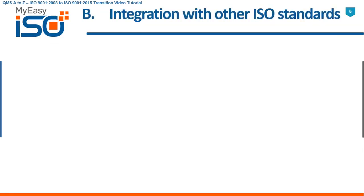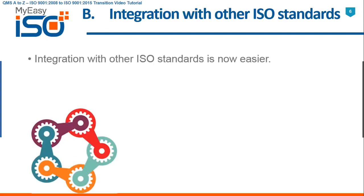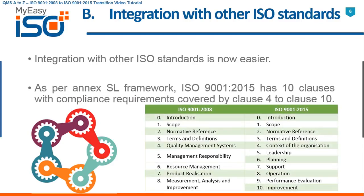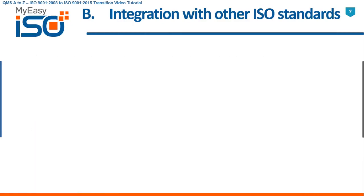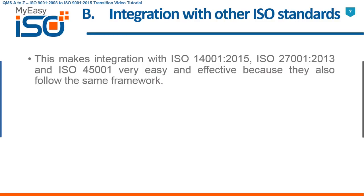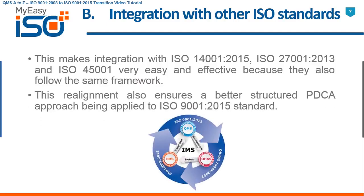B — Integration with other ISO standards is now simple and easy. As per the Annex SL framework, ISO 9001 2015 has 10 clauses with compliance requirements covered by Clause 4 to Clause 10. This makes integration with ISO 14001 2015, ISO 27001 2013 and ISO 45001 very easy and effective because they follow the same framework. This realignment also ensures a better structured PDCA approach being applied to ISO 9001 2015 standard.